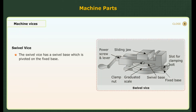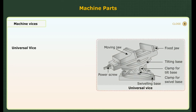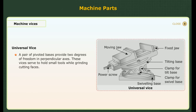The swivel vise has a swivel base which is pivoted on a fixed base. A clamp nut is provided to fix the position. Usually a graduated scale is provided and the swivel angle can be read. The fixed base is clamped to the machine bed using T-bolts. In a universal vise, a pair of pivoted bases provides two degrees of freedom in perpendicular axes. These vices serve to hold small tools while grinding cutting faces.